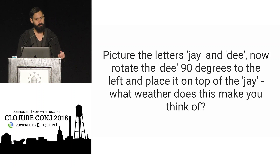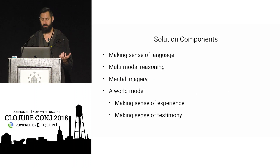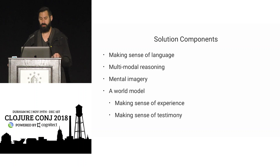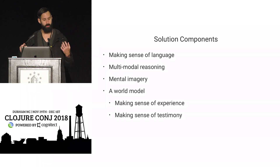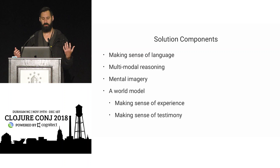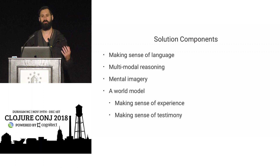Here's an example question for your Voight-Kampff test: picture the letters J and D; rotate the D 90 degrees to the left; put the D on the J — what weather does this make you think of? Rain — you're making an umbrella. This example is adapted from a podcast with Daniel Dennett. If you can answer a whole lot of questions like this, you'll convince me something mind-like is going on. Alexa or Siri probably can't get this; probably not Watson without a prep team.